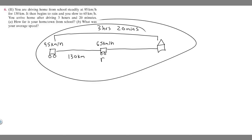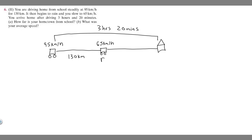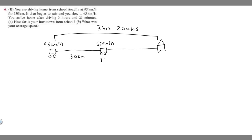I drew a diagram here of what's going on. We have our car traveling 95 kilometers per hour and it does that for 130 kilometers. Then at this point the car slows down to 65 kilometers per hour because it starts to rain, and we keep traveling home until we eventually arrive. The whole trip takes three hours and 20 minutes. We know the first distance but not the second, so we need to find that second distance and how long each part took.